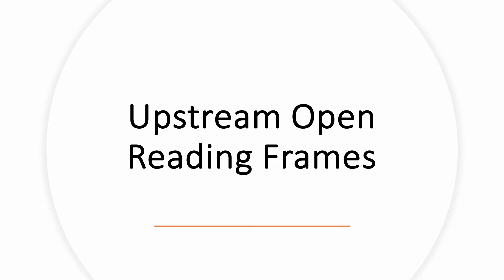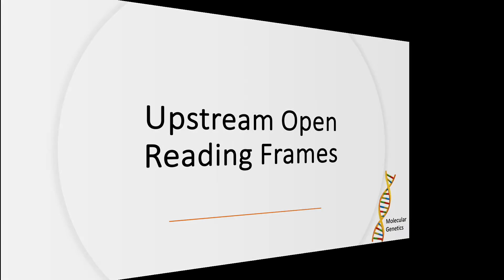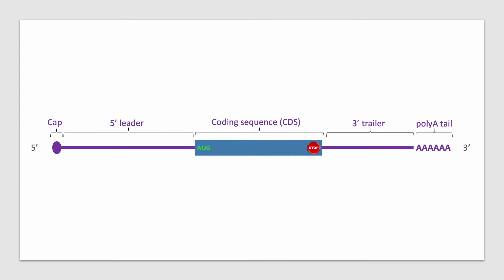In this video, we will be going over upstream open reading frames. Here we have messenger RNA or mRNA. mRNA serves as a template for synthesis of polypeptides, the building blocks of proteins, in a process known as translation.